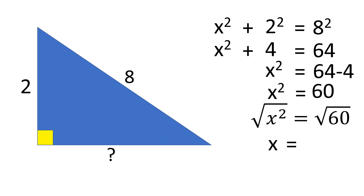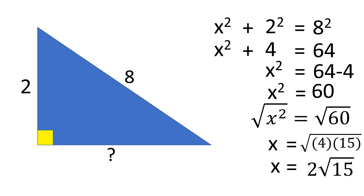But then, we have to separate 60 into two parts so that one part is a perfect square. That is the square root of 4 times 15, where 4 is a perfect square. That means we can take the square root of 4 and leave 15 inside the square root. That is 2 square root of 15. So the square root of 60 is 2 square root of 15. The sides are not all whole numbers, and that means this is not one of the Pythagorean triples.